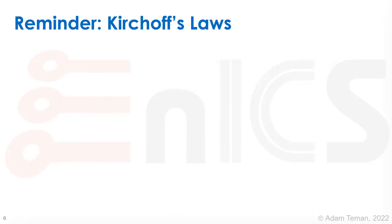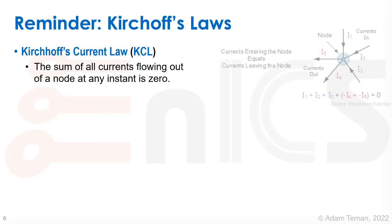So that was a bit of a historical perspective. And now a bit of a background. And I just want to remind you guys of Kirchhoff's laws. So the KCL, Kirchhoff's current law, is that the sum of all currents flowing out of a node at any instant is zero. So of course, we have like a node over here and we have different currents coming in and we have different currents going out.